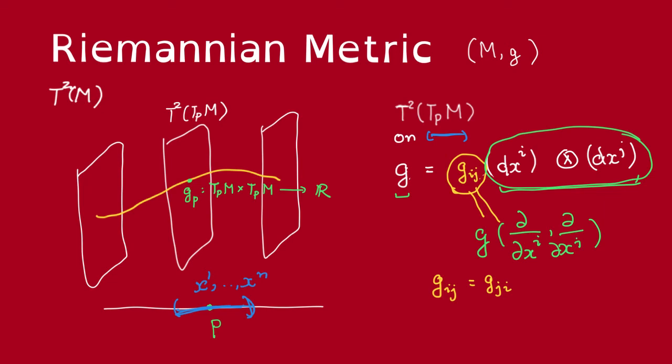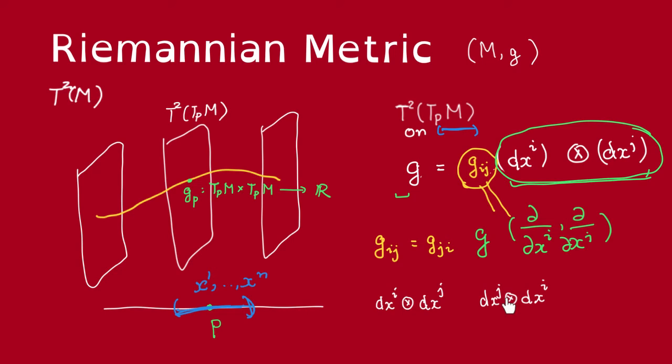Thus, there are repetitions in this expression. So, now we want to write it in the way that each of the g_ij just appear once. So, we want to group these expressions together. We'll do so by defining the following expression dx^i times dx^j.